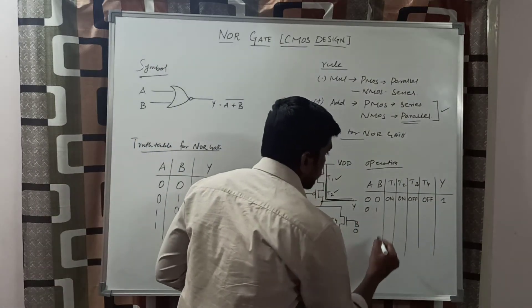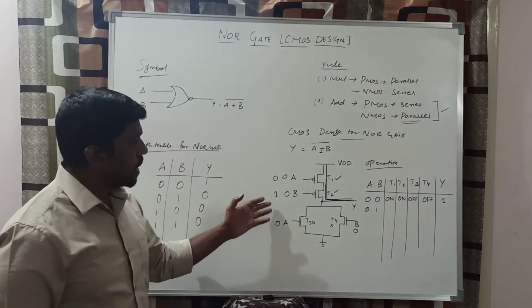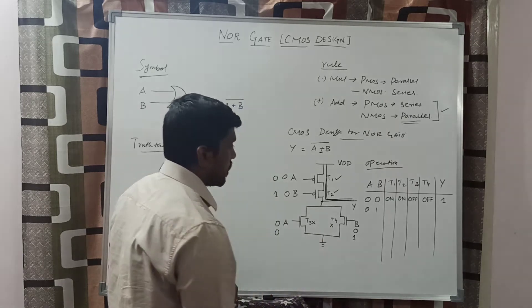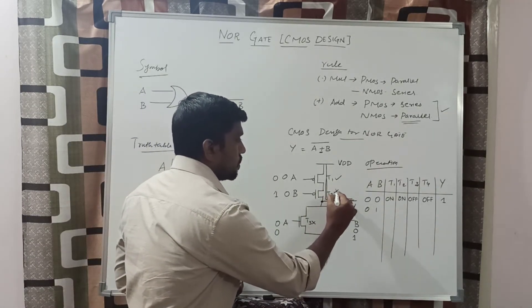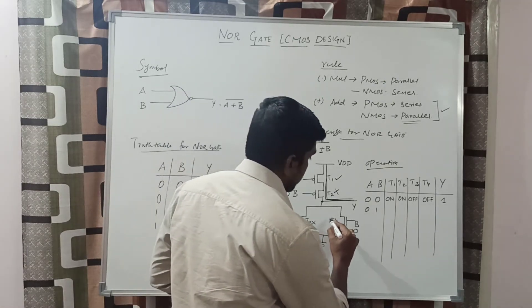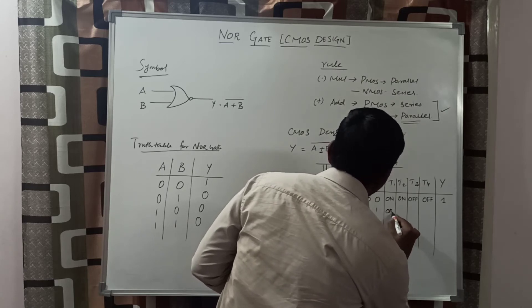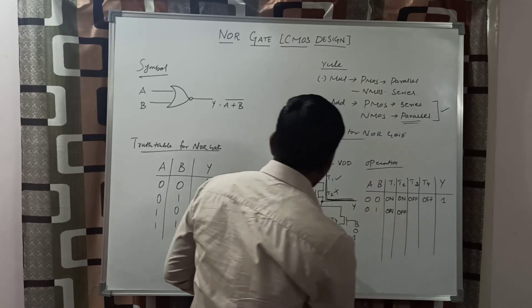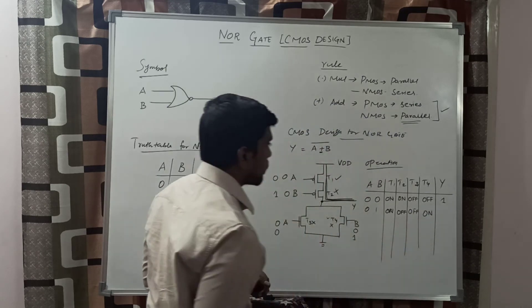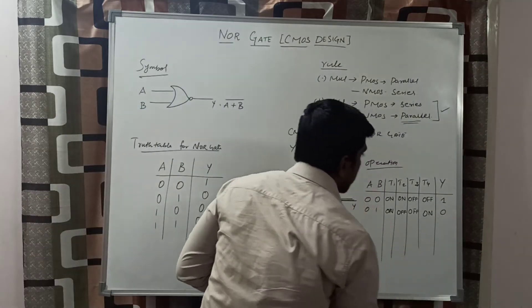Next, we check the second case with input A equal to 0 and B equal to 1. The same input is applied to the pull-down network: A value 0, B value 1. In this case, T1 transistor turns on, T2 transistor is off, T3 is off, T4 is on. Since T1 is on but T2 is off in the series pull-up network, there is no possibility to connect VDD to the output. The response of the circuit is 0.